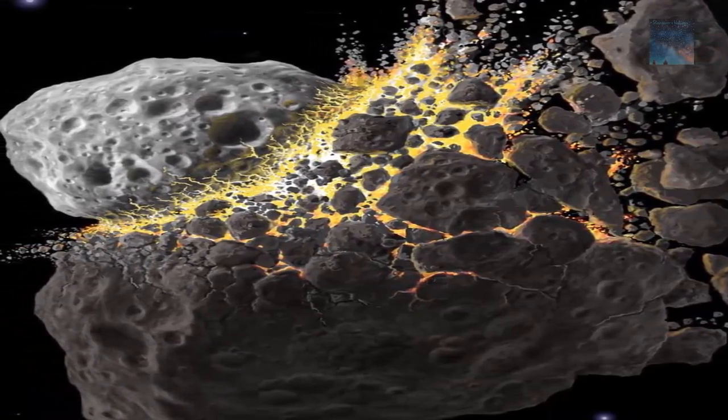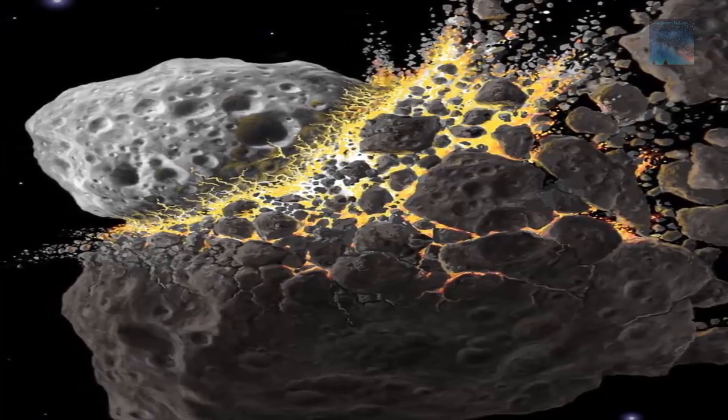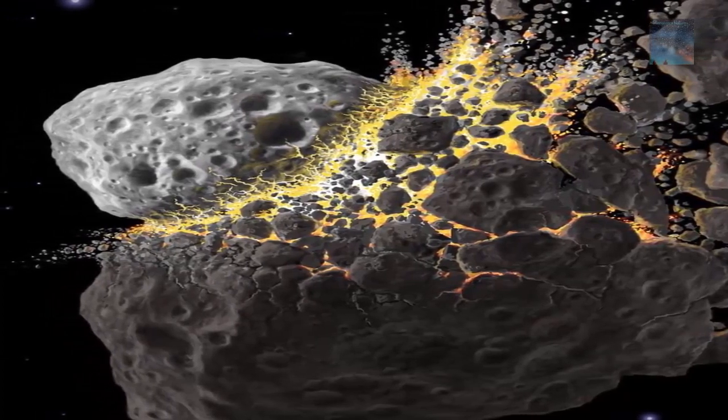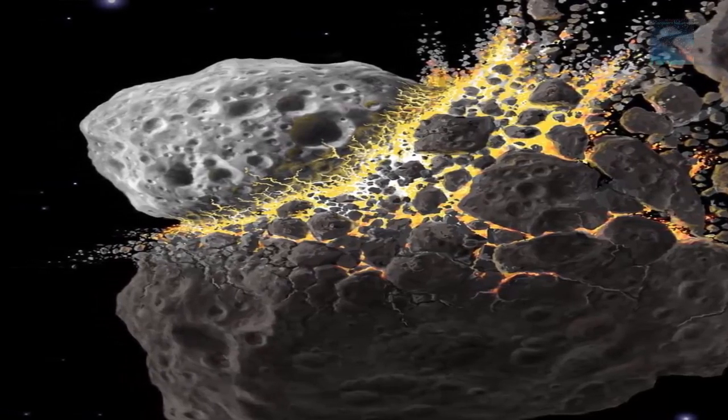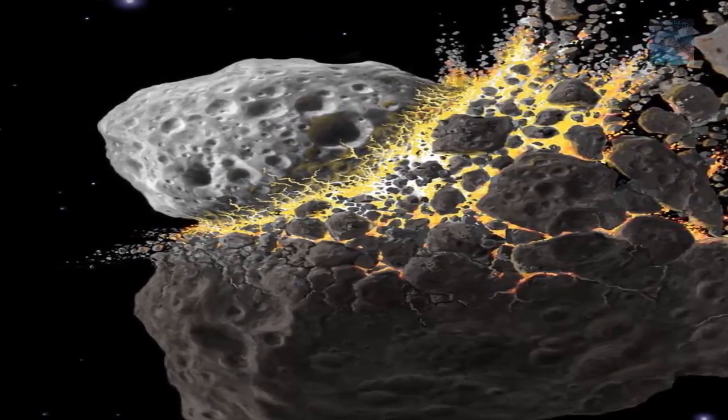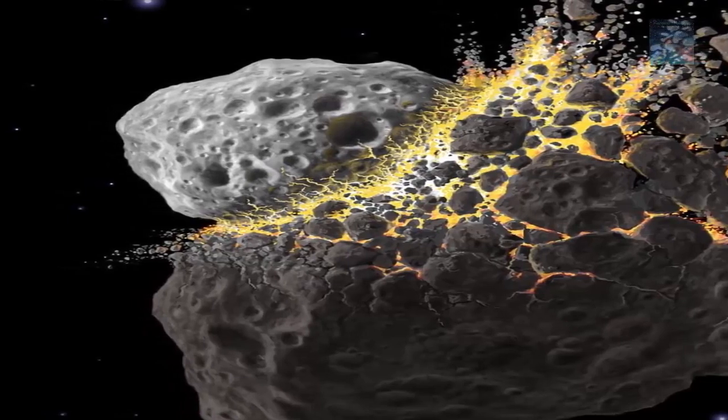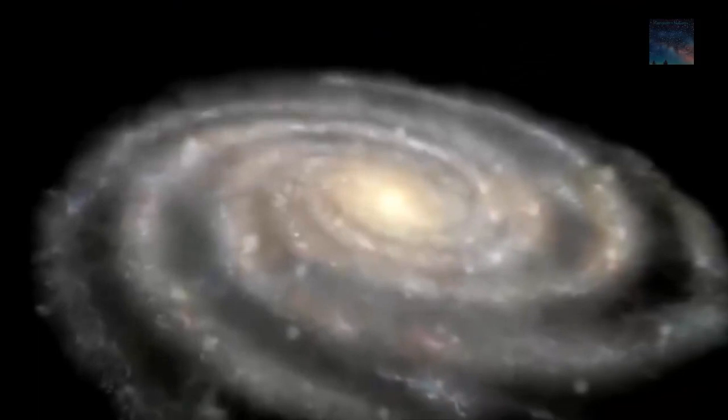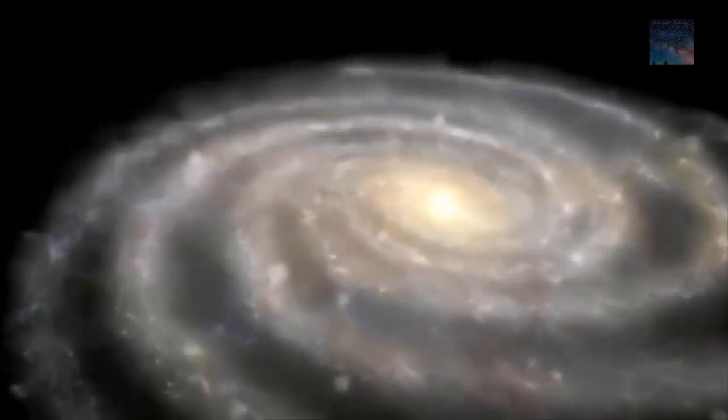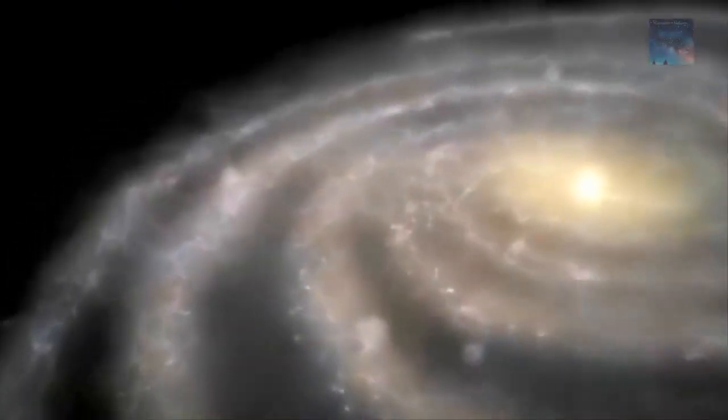The finding doesn't only eliminate a mystery of the asteroid belt, it could also help resolve a debate about the formation of the eight planets, including Earth. There is an important implication of the idea that asteroids are actually fragments of larger bodies: it means asteroids are born big. That finding may help resolve a question about planet formation that has baffled scientists for years.